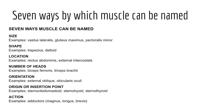Moving away from the neck region, the brachioradialis muscle is named based on origin and insertion — the origin from the brachium or arm and insertion on the radius. And finally, muscles may be named according to their action — examples include extensors, flexors, adductors, abductors, supinators, and pronators.